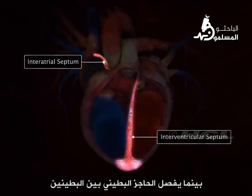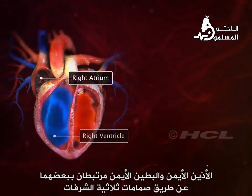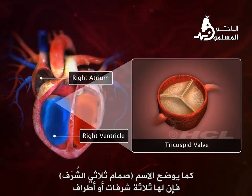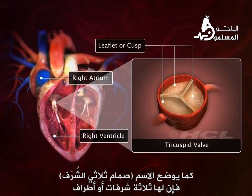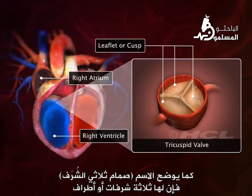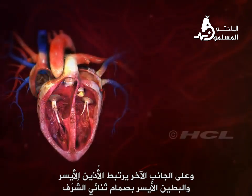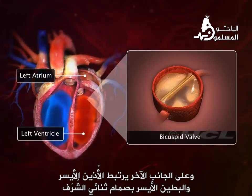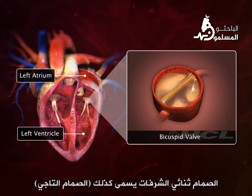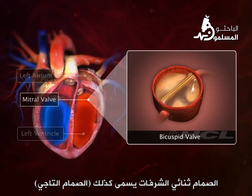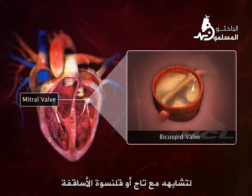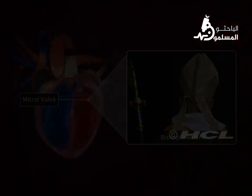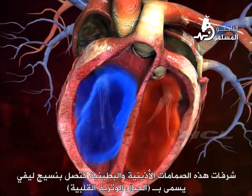The right atrium and right ventricle are connected through a tricuspid valve — as the name suggests, it has three leaflets or cusps. On the other side, the left atrium and ventricle are connected through a bicuspid valve, also called the mitral valve because of its resemblance to a bishop's two-sided mitre or hat.